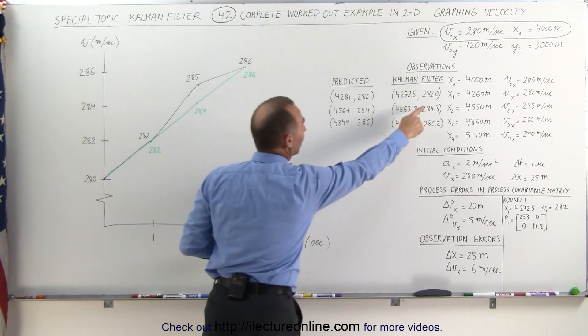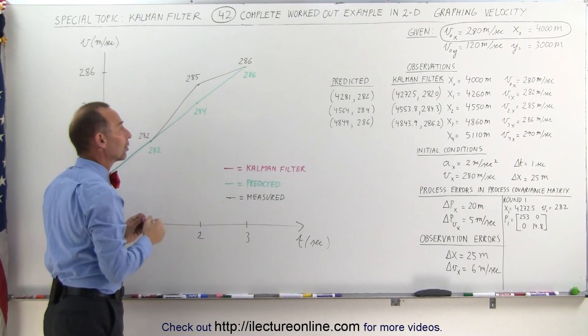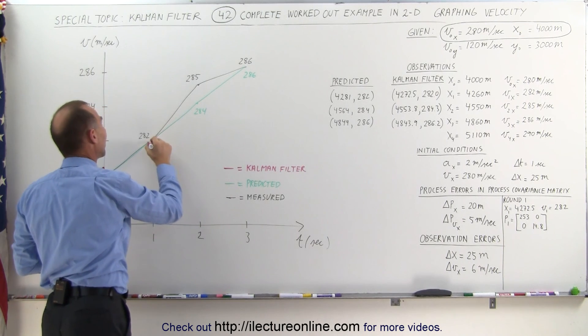Notice the Kelvin filter velocities. Since both the predicted and the measured values were at 282, the Kelvin filter value is also at 282.